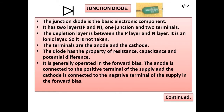Junction Diode: The junction diode is the basic electronic component. It has two layers, P and N, one junction, and two terminals. The depletion layer is between the P layer and N layer. It is an ionic layer.